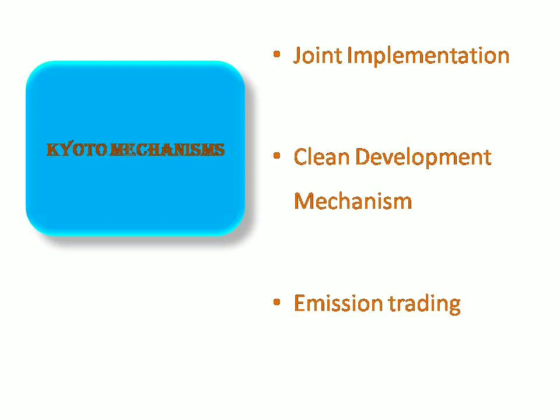The next mechanism is the Clean Development Mechanism. In this mechanism, the developed country can invest in other developing countries — not in other developed countries as in Joint Implementation, but in developing countries. They can provide technological assistance or financial support for such projects in developing countries. Thereby, the developed countries can escape from their penalty by investing in developing countries if they exceed their limit. That is the Clean Development Mechanism. The next one is Emission Trading.